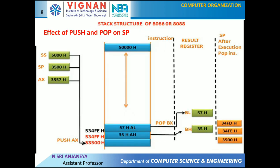Next, we will see the effect on SP for every push and pop operation. Here, SS is 5000, SP is 3500H, and AX is 3557h. First, execute PUSH AX — 3557h is moved to the top of the stack, with the high byte 35h stored first and the low byte 57h next. Then the stack pointer is decremented by 2. Assume the next instruction is POP BX: the present top data, 3557h, is moved to BX. 57h is moved to BL and 35h is moved to BH. That is the result of the POP BX operation. For every pop operation, the stack pointer is incremented by 2.